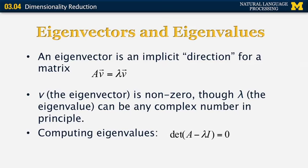One other important concept of linear algebra related to dimensionality reduction is that of eigenvectors and eigenvalues. An eigenvector is an implicit direction for a matrix. If we multiply a vector V — the eigenvector — to the right-hand side of a matrix A, we obtain the same result as if we had multiplied V by lambda, which is a scalar called an eigenvalue. The eigenvalue lambda can in principle be any complex number, but for the examples we'll look at, it will always be real. To compute the eigenvalues of a matrix, we need to find the determinant of (A − λI), where I is the identity matrix of the same size as A, and set this determinant equal to 0.